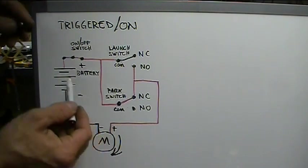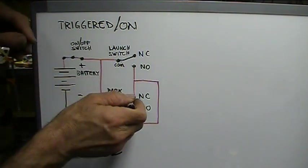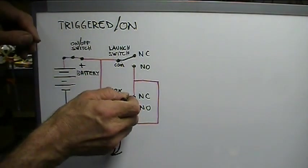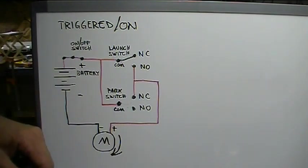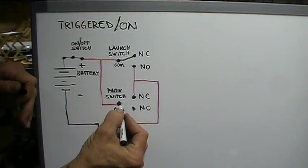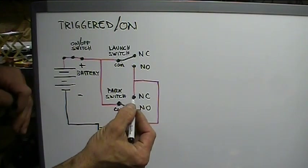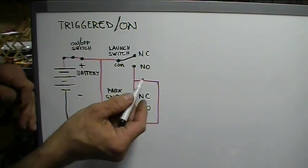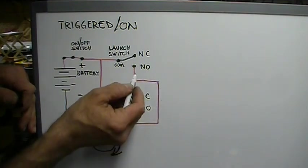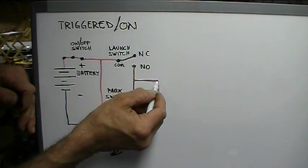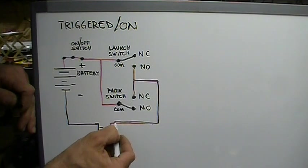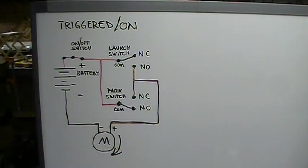Where what happens? The cam acts upon the park switch once again. Once that happens, this goes back to a position where it's on the normally open. It is no longer having continuity to this. Therefore, power is not running to the motor. This has now gone back to a state of no power and everything stops. It's all parked again.